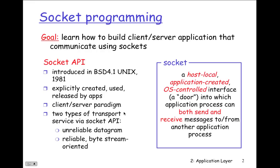There are two types of transports that work via the socket API: unreliable datagrams, or UDP, and reliable byte stream, stream-oriented TCP. By definition, a socket is a host-local, application-created, OS-controlled interface — or a door — into which application processes can both send and receive messages to and from another application process on another device.